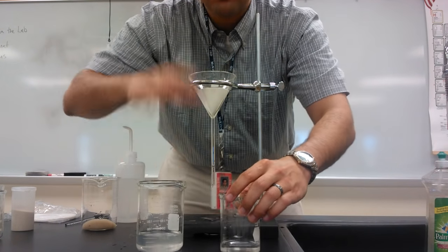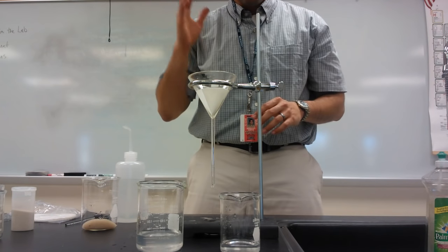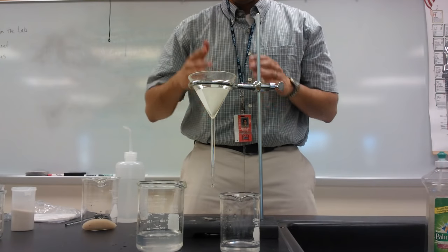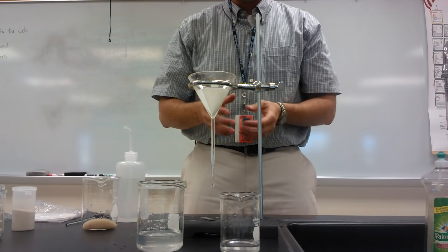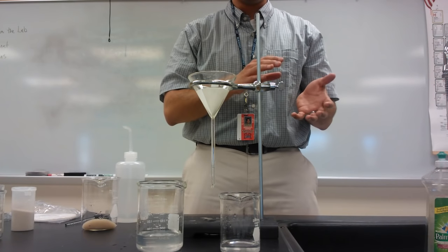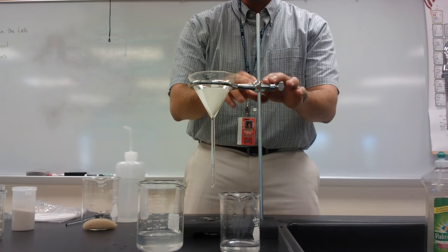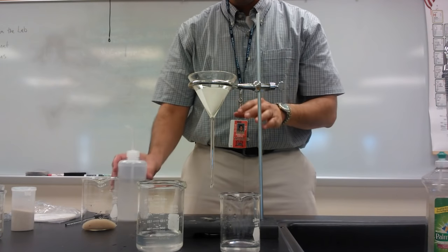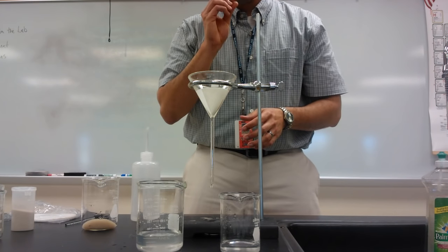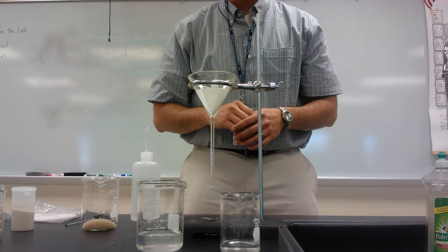So those are the two types of separation techniques that we use. One of them is decantation — we decant the liquid to separate it from big particles of solids. The other one is filtration — we use this setup with a ring stand, the ring, the funnel, the filter paper, and the wash bottle. And that allows us to separate smaller, finer particles that we cannot separate through decantation. Thank you.